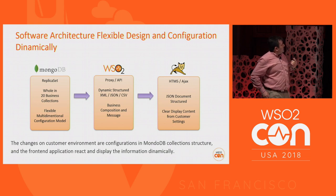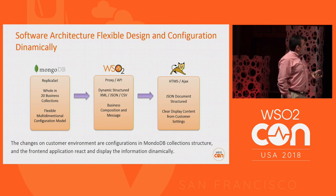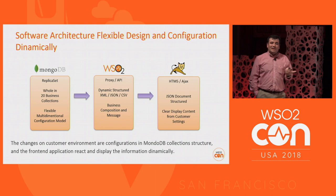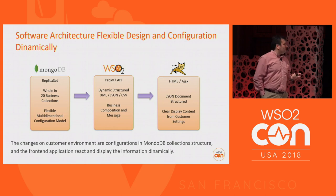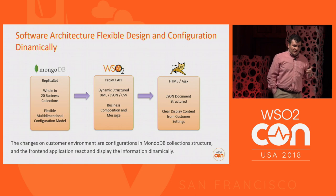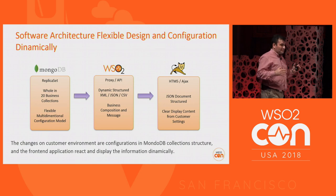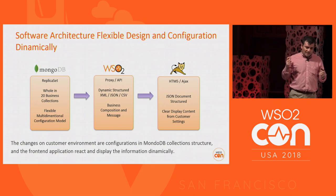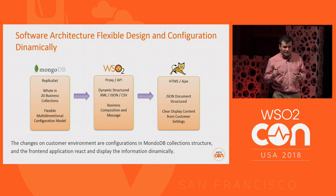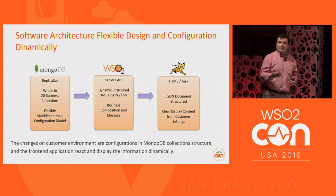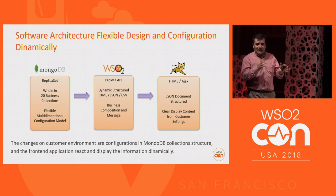The software architecture is designed to react dynamically to contract conditions for our customers, where the contract, the customer, and the display information on a website change dynamically. You can apply permissions or change colors on the front-end display and have it updated dynamically for all customers, all clients, or all contracts.